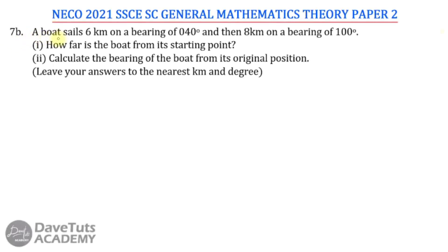We have a question on bearing and distances. A boat sails 6 km on a bearing of 040 degrees and then 8 km on a bearing of 100 degrees. We have to find how far the boat is from its starting point and calculate the bearing of the boat from its original position. Our answers will be to the nearest kilometer and degree.